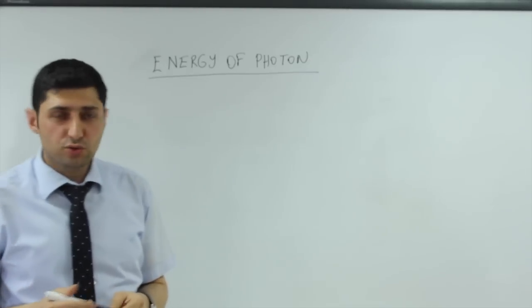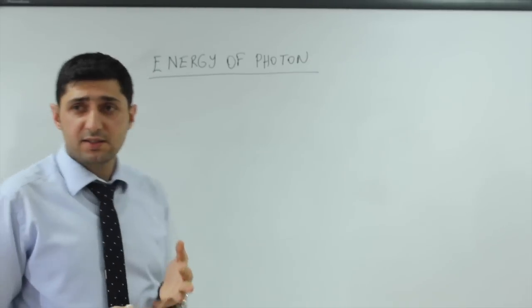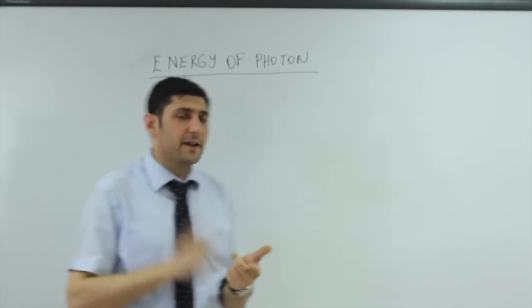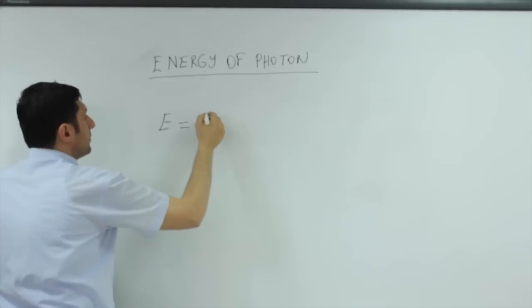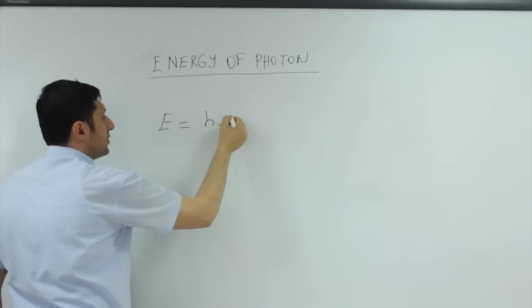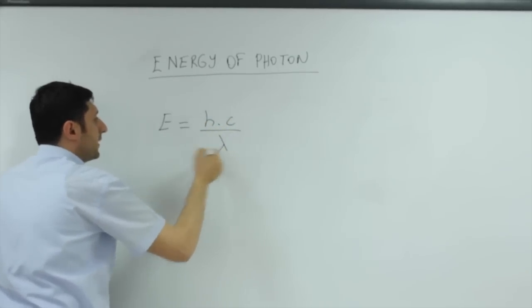Energy of photon depends on Planck's constant, speed of light, and wavelength. Energy of photon is equal to Planck's constant times speed of light over wavelength of photon.